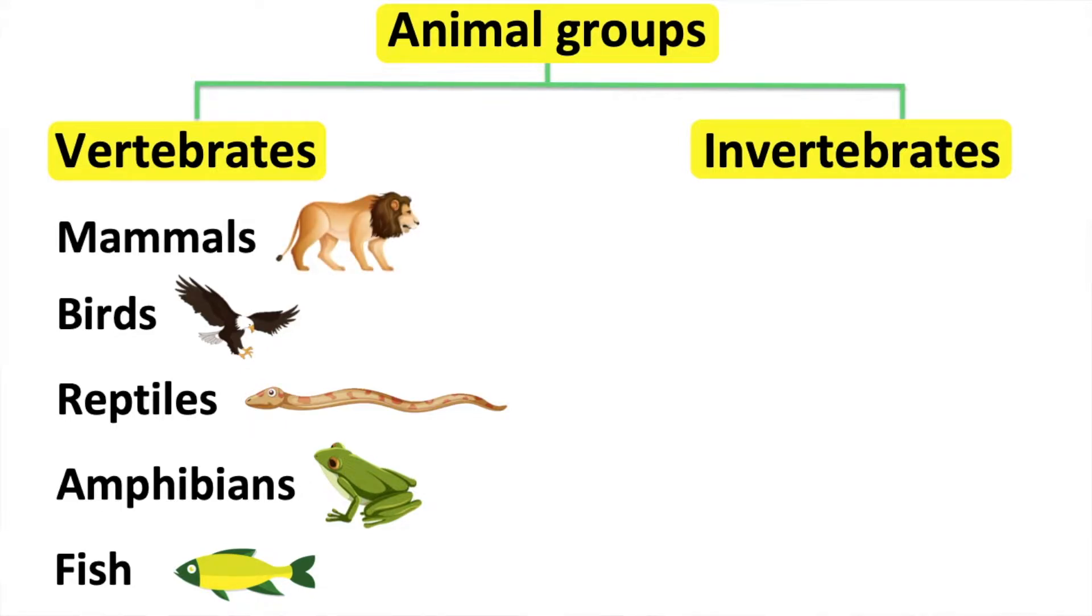Mammals have body hair or fur. They use their lungs to breathe. Mammals are born live and they drink milk. A mammal's body temperature is usually stable. Therefore, they are warm-blooded animals. An example of a mammal is a lion.